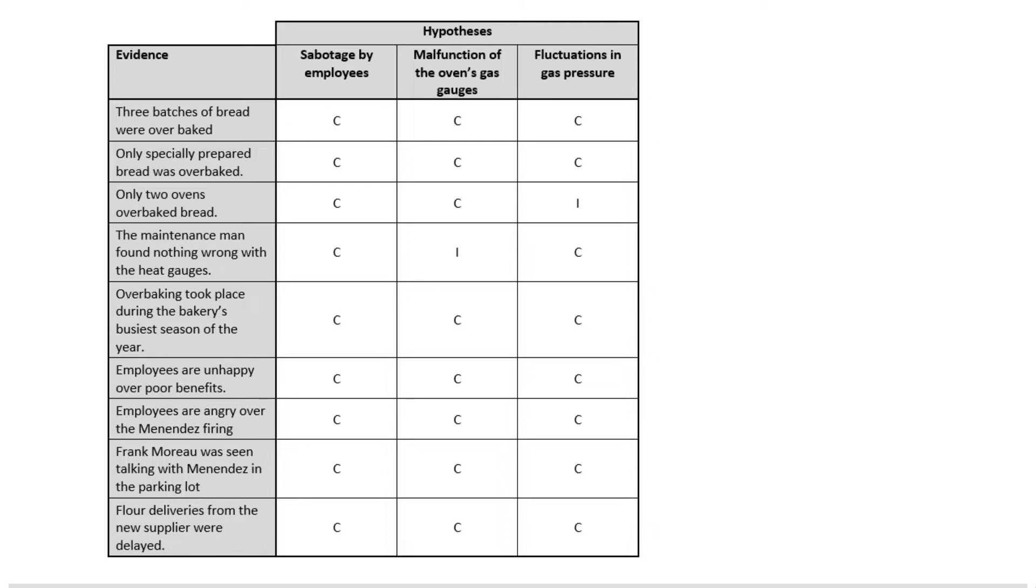I'm not going to talk through everything, you can certainly pause if you want to do the calculations yourself. We'll start with that first row: three batches of bread were over baked. Could sabotage by employees account for that? Yes it absolutely could, so we're going to put a C there to indicate that that piece of evidence is consistent with employees sabotaging bread.